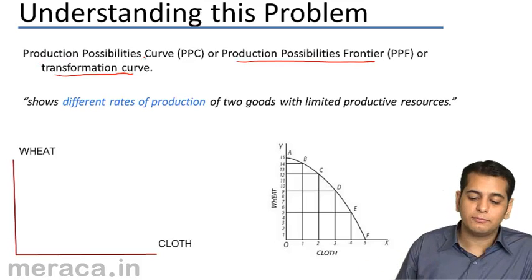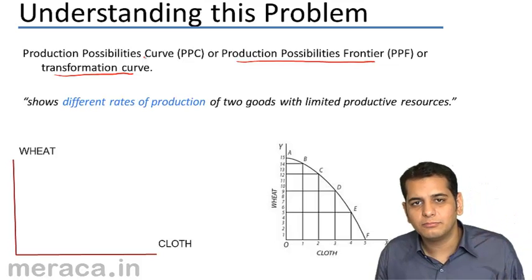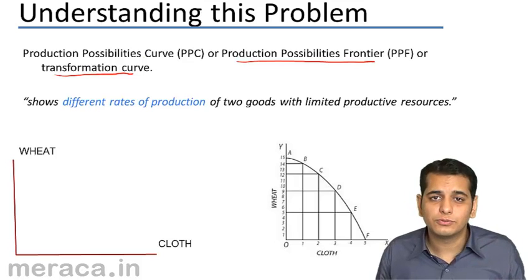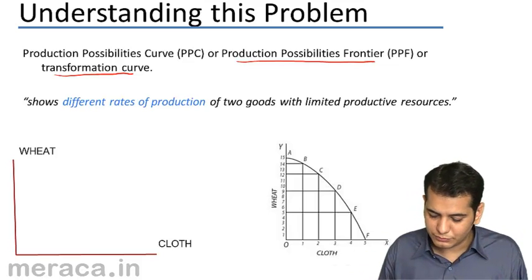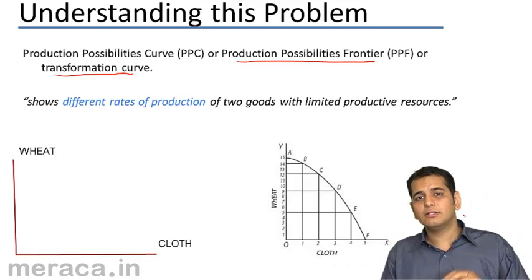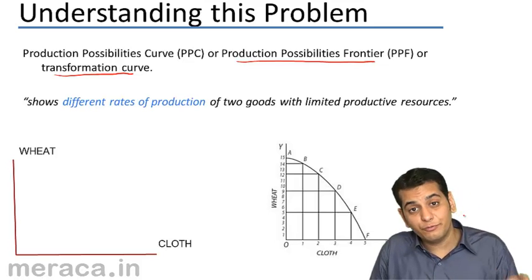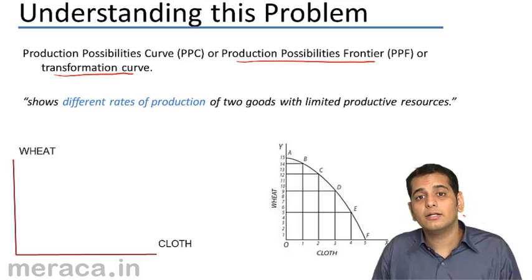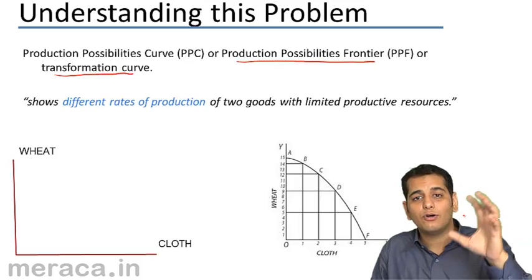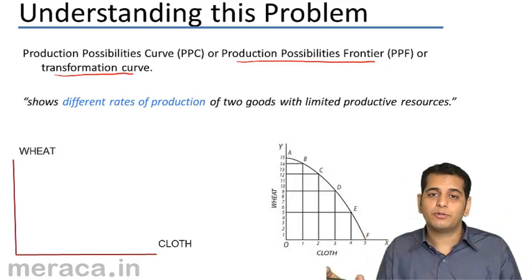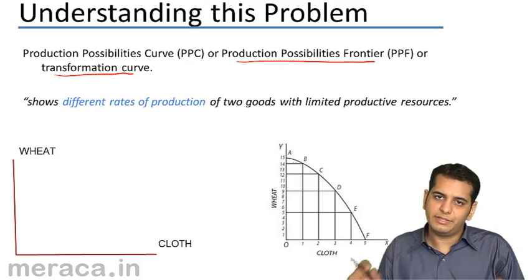This is the Production Possibility Curve. It gives you the maximum amount of goods that you can produce, and all the possibilities of combinations of goods you can produce. For example, how many units of wheat can you produce if you are only producing wheat? But if you are producing cloth as well, how many units of wheat and cloth together can you produce? It gives you different possibilities.